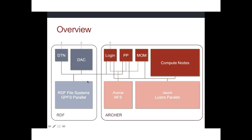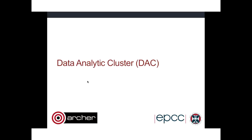So that's how RDF and Archer fit together and how the different file systems are mounted across different nodes. I'm now going to talk more specifically about the RDF hardware — the data analytic cluster and the data transfer nodes. The disks themselves are not particularly interesting: there's about 20 petabytes of usable storage split across various file systems, available through standard file systems.